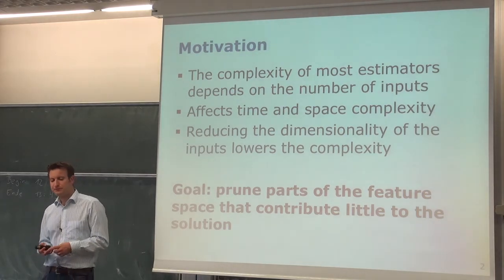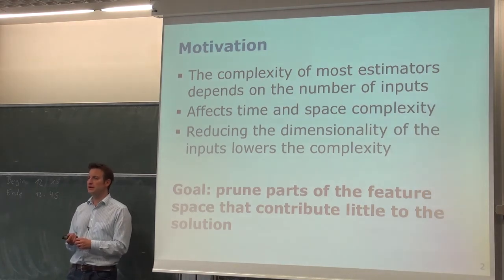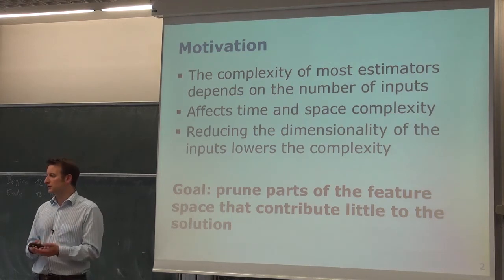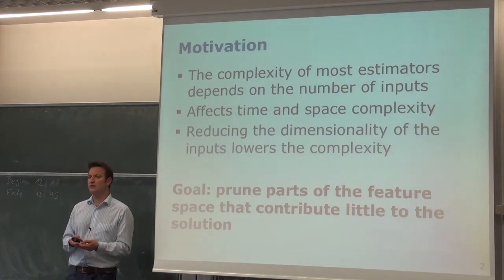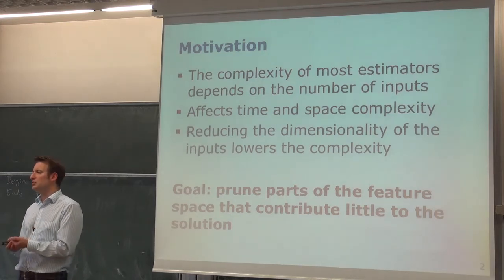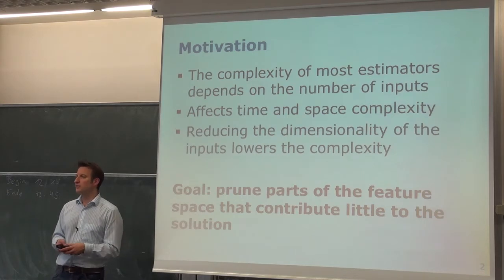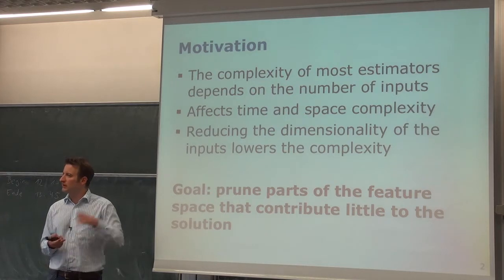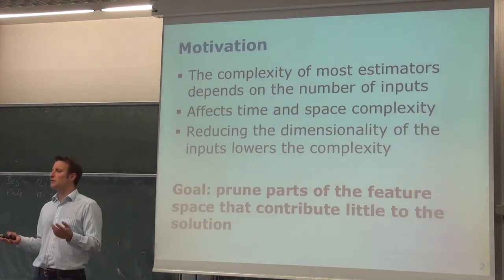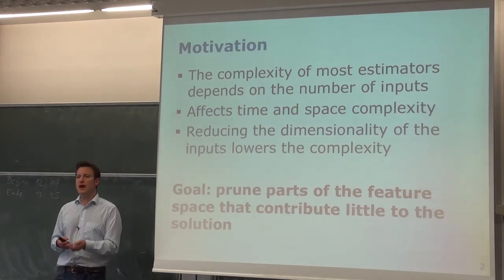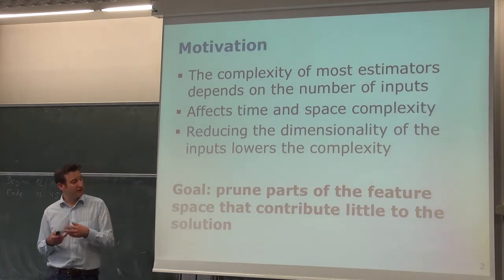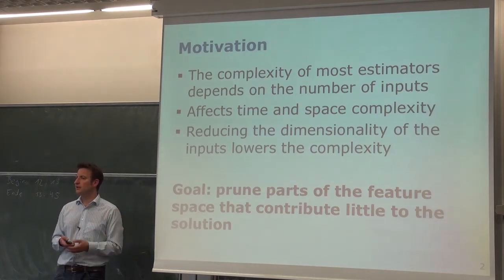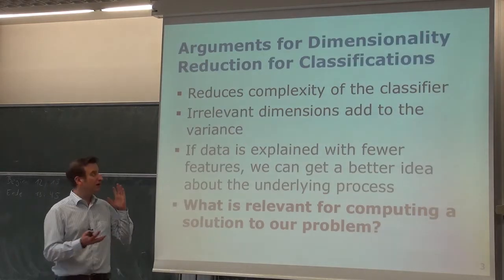If we are able to reduce the dimensionality of our input data — say from a 100-dimensional space to a 3-dimensional space — and we have the same expressiveness, that is ideal. This typically means certain dimensions are strongly correlated with each other, so if you know one dimension you can infer the others. The goal is to reduce our feature space so we lose as little information as possible and remain efficient.